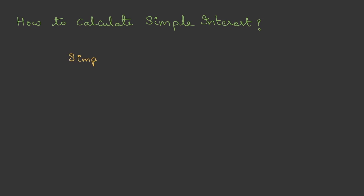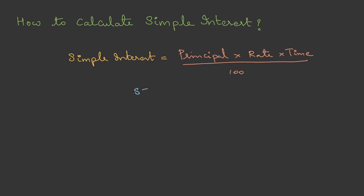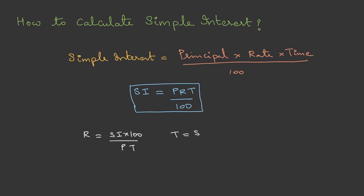Now the question is: how do we calculate simple interest? We have a formula: Simple Interest = (Principal × Rate × Time) / 100, written as SI = PRT/100. If the question asks for rate of interest, then R = (SI × 100) / (P × T). Time = (SI × 100) / (P × R), and Principal = (SI × 100) / (R × T) — basically all permutations of this formula.